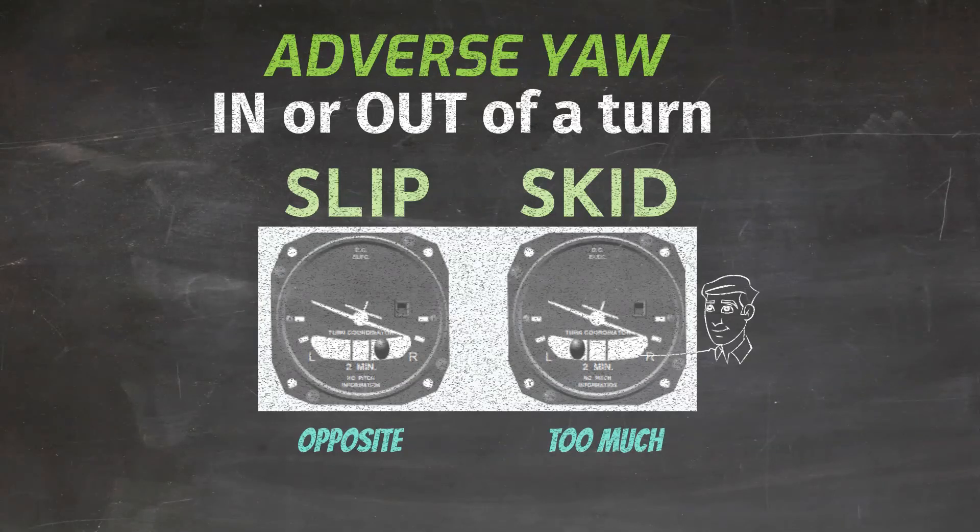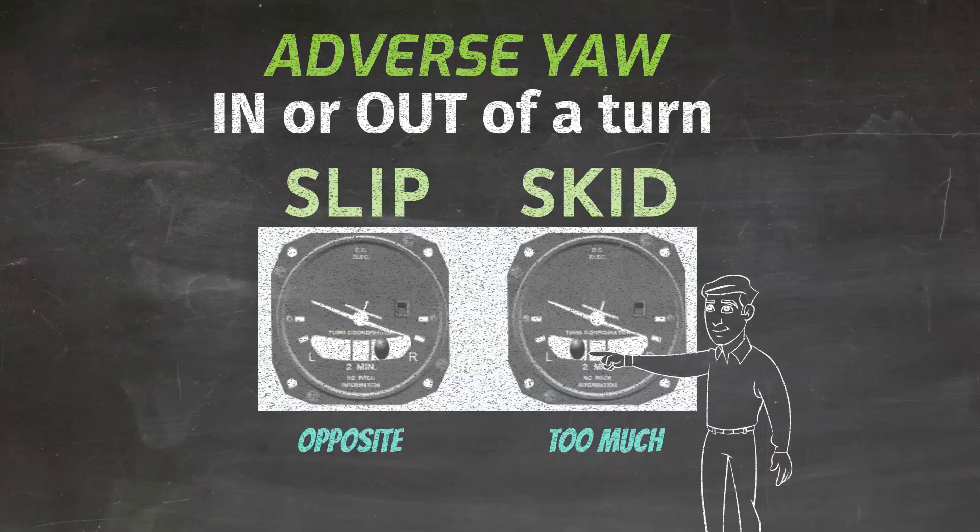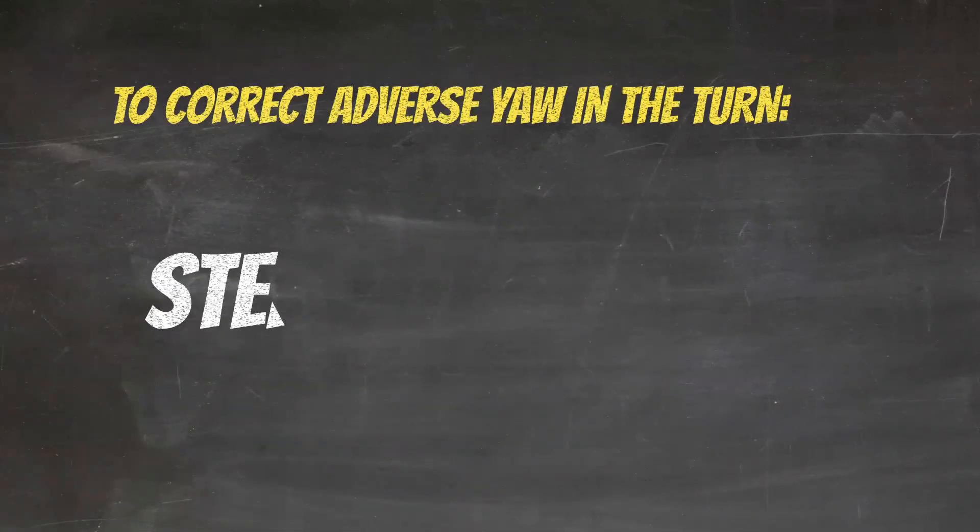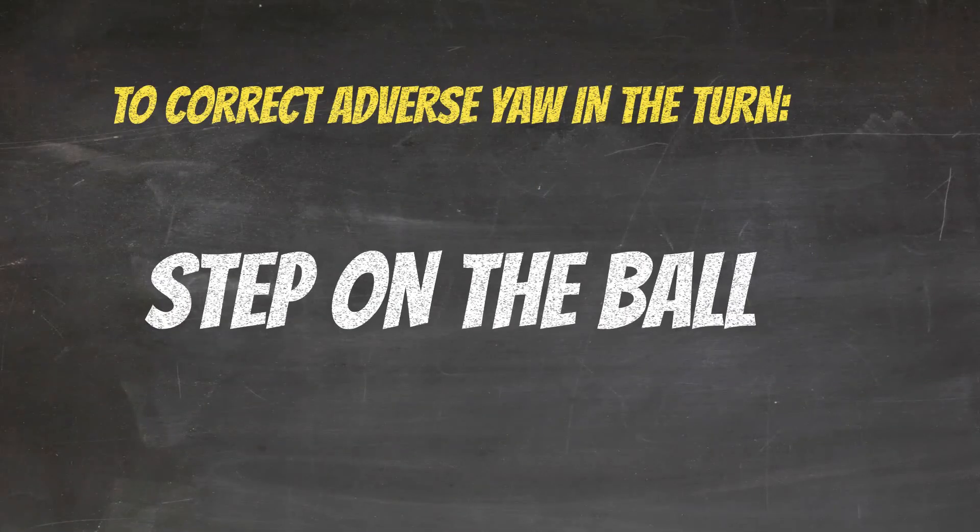Either way, we can fix the problem by pressing the rudder pedal on the side where the ball is displaced. In other words, to correct for adverse yaw, step on the ball.